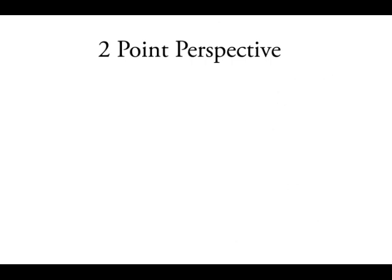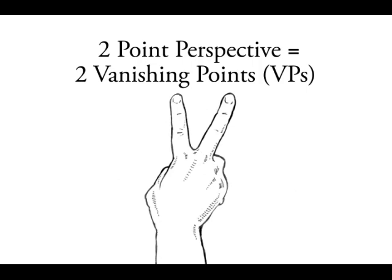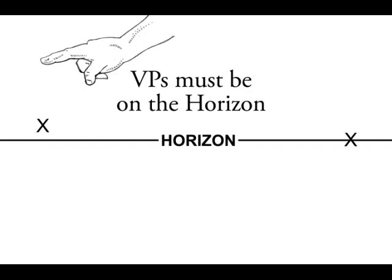Two-point perspective requires two vanishing points. Vanishing points must be on the horizon.